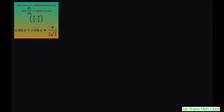We're going to differentiate this, and we have to use the product rule. Copy down your x times the derivative of sine of y, which is cosine of y, times dy/dx, plus the derivative of x is 1 times sine of y. That's the first part.